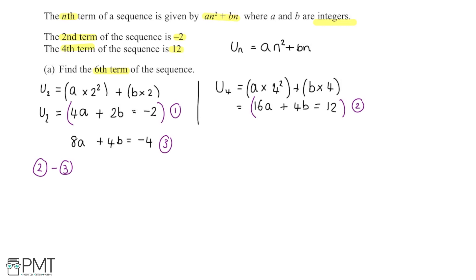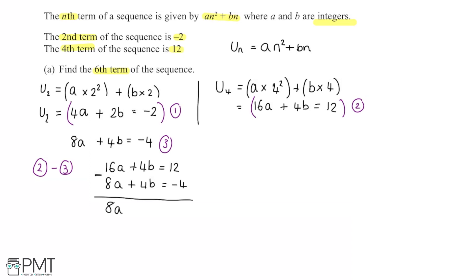Taking equation 2 (16a plus 4b equals 12) and subtracting equation 3 (8a plus 4b equals minus 4): 16a minus 8a gives 8a, 4b minus 4b gives zero, and 12 minus minus 4 equals 12 plus 4, which is 16. So 8a equals 16, and dividing both sides by 8 gives a equals 2.